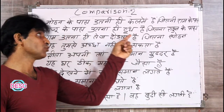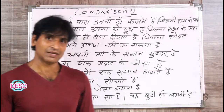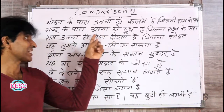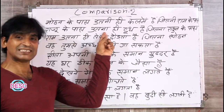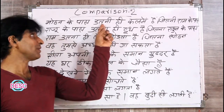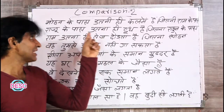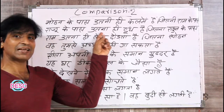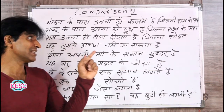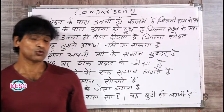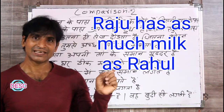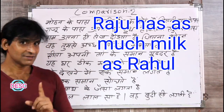Doosra sentence: Raju ke paas utna hi doodh hai jitna Rahul ke paas. Yahan sentence same lagta hai, but fark yeh hai ki yahan jo cheez hai woh uncountable hai. Isliye yahan 'many' nahi lagaenge, balki 'much' lagaenge. Toh banta hai: 'Raju has as much milk as Rahul.'